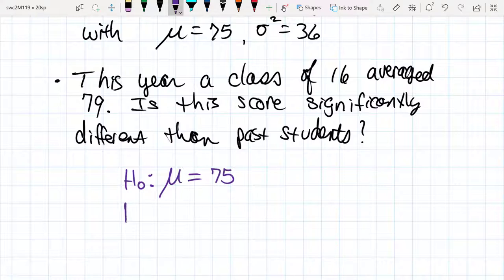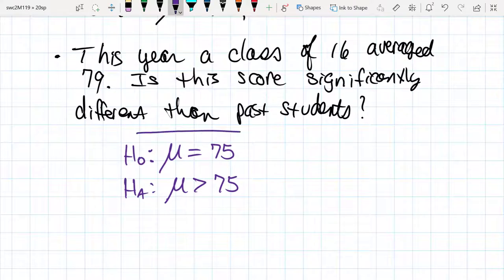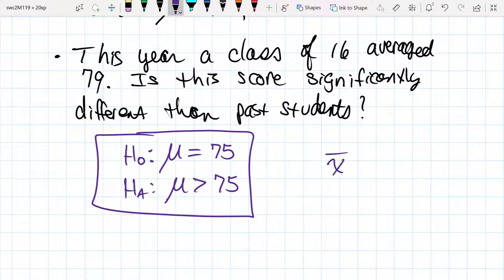The alternative hypothesis is that for these students, their mean is greater than 75. And so this was what the original question was, and then a test was done and we came up with a statistic.